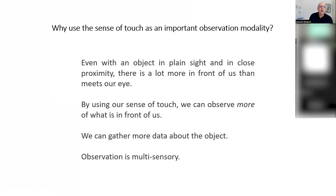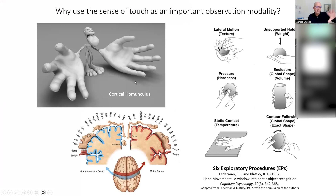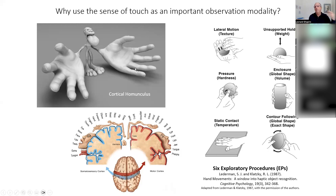Why is touch important in observing? Even with an object in plain sight and in close proximity to us, there is a lot more in front of us than meets the eye. By using our sense of touch we gather more data. The cortical homunculus — the little figure on the far left — represents the number of nerves coming from any part of the body to the sensory cortex. The hands take up a very large part of the sensory cortex and motor cortex, so it makes sense to use touch alongside sight to add information about an object's three-dimensional form.